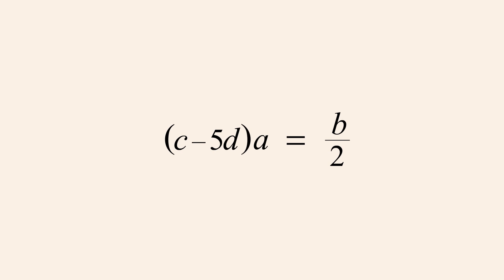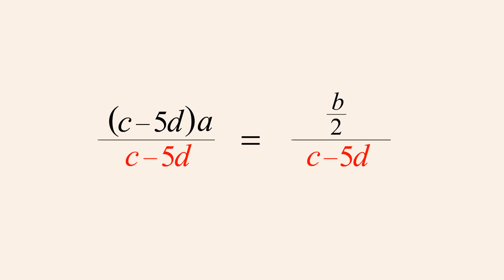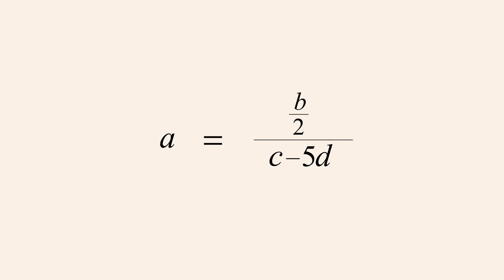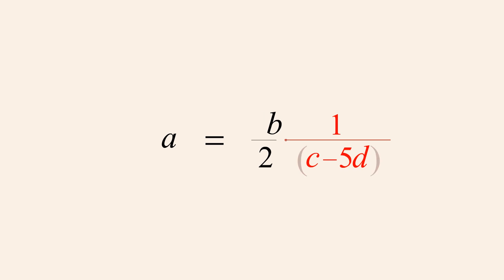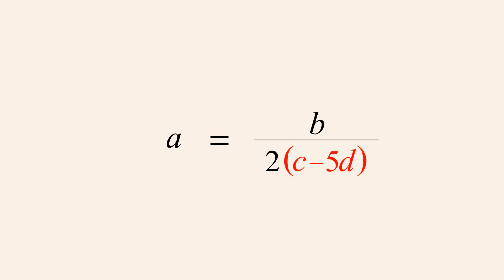We must now eliminate the terms in parentheses so that the variable A is alone on the left side. Dividing both sides of the equation by the terms in parentheses, we can then cancel those terms in the numerator and denominator of the fraction on the left, leaving A alone on the left side. As in the previous example, we can simplify the complex fraction on the right, since dividing the fraction b over 2 by the terms in the denominator is the same as multiplying b over 2 by the reciprocal of those terms. Multiplying the numerators and denominators gives us b over 2 times the terms in parentheses. We have now solved the equation for A.